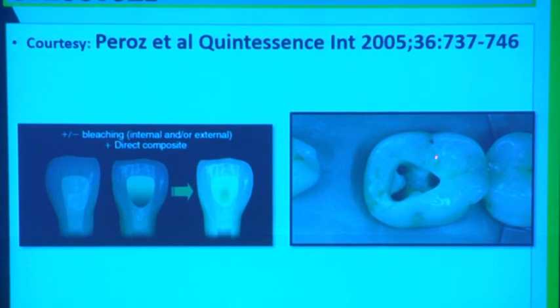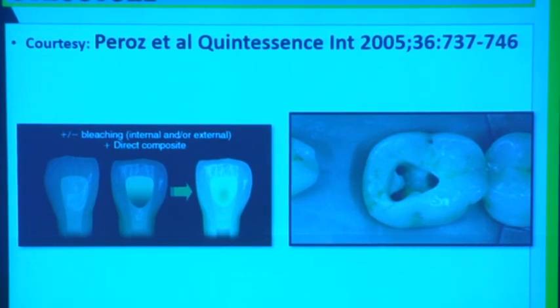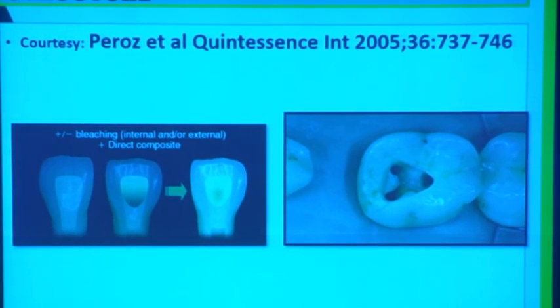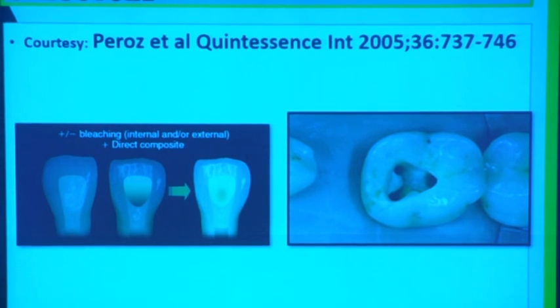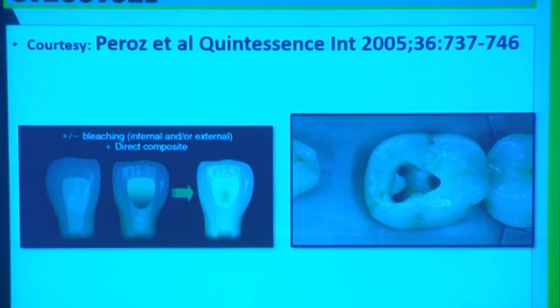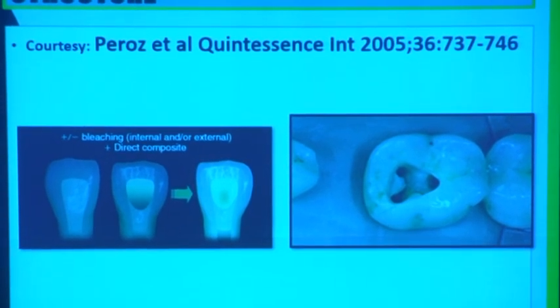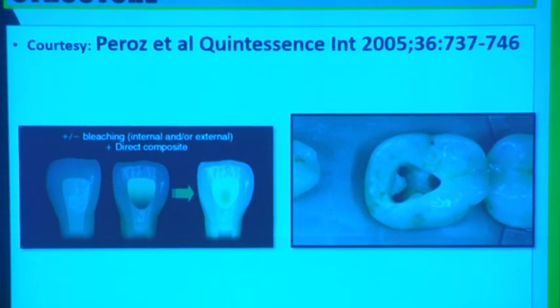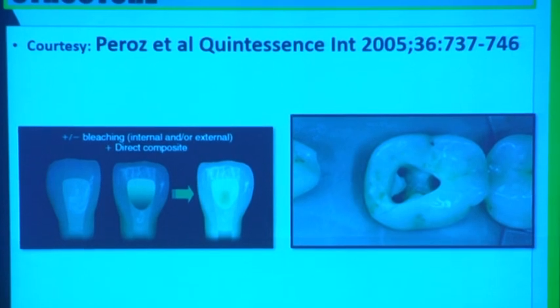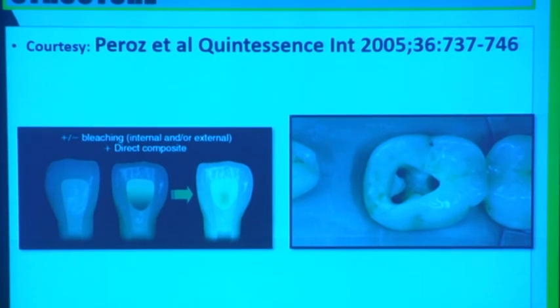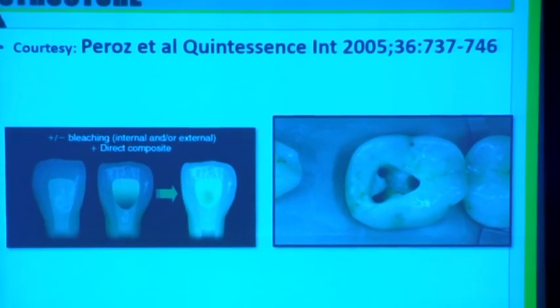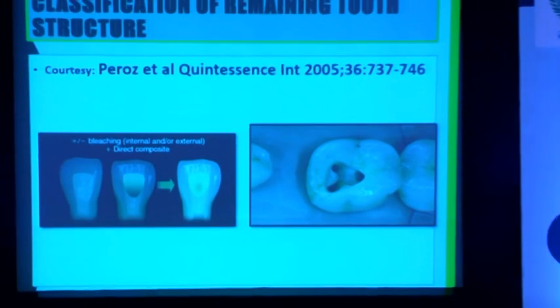If it is a posterior tooth, again you have to re-evaluate based on the occlusal forces — how much occlusal forces, the shape or position of the tooth in the arch, whether it is going for an FPD — all these things you need to re-evaluate.